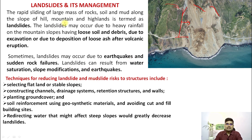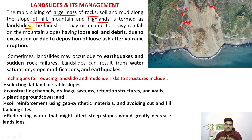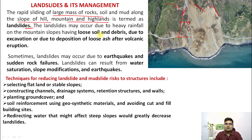Rapid sliding of a large mass of rock, soil, and mud along the slope of a hill, mountain, or highland is termed a landslide. In the mass wasting lecture in geomorphology, we have already discussed various kinds of landslides and various factors related to them. Landslides may occur due to heavy rainfall on mountain slopes having loose soil and debris.